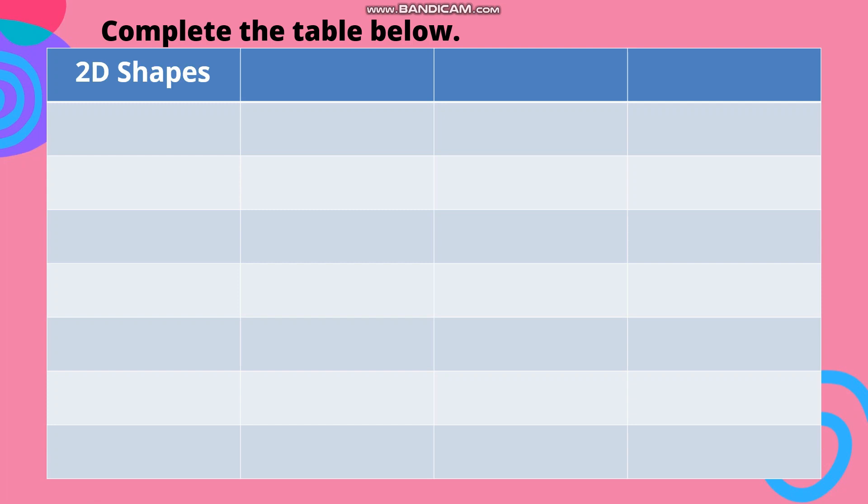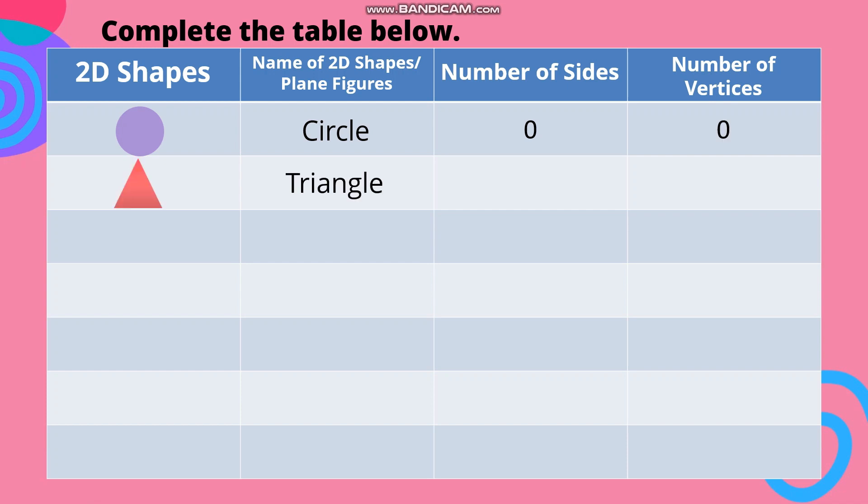Complete the table below. In the first column, we have 2D shapes. Second column, name of 2D shapes. Third column, number of sides. Fourth column, number of vertices. Number 1: Plane figure - circle. Number of sides - 0. Number of vertices - 0. Plane figure - triangle. Number of sides - 3. Number of vertices - 3.